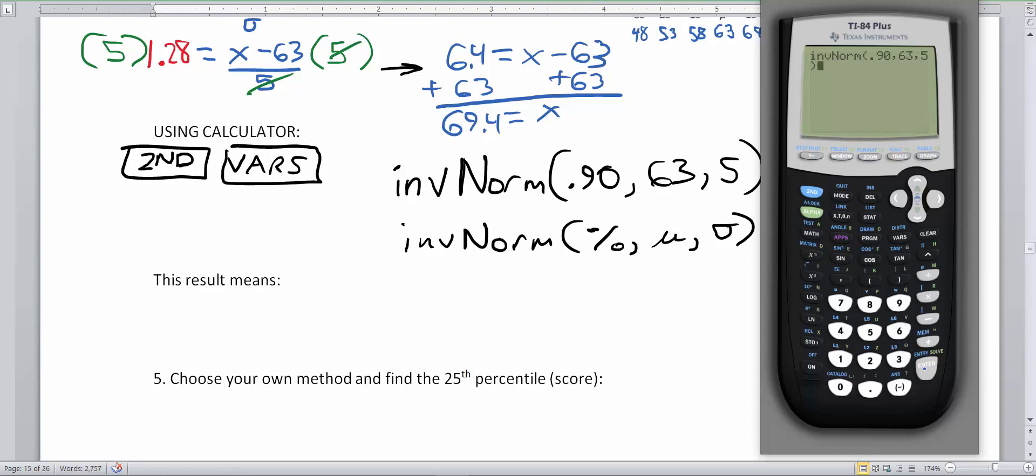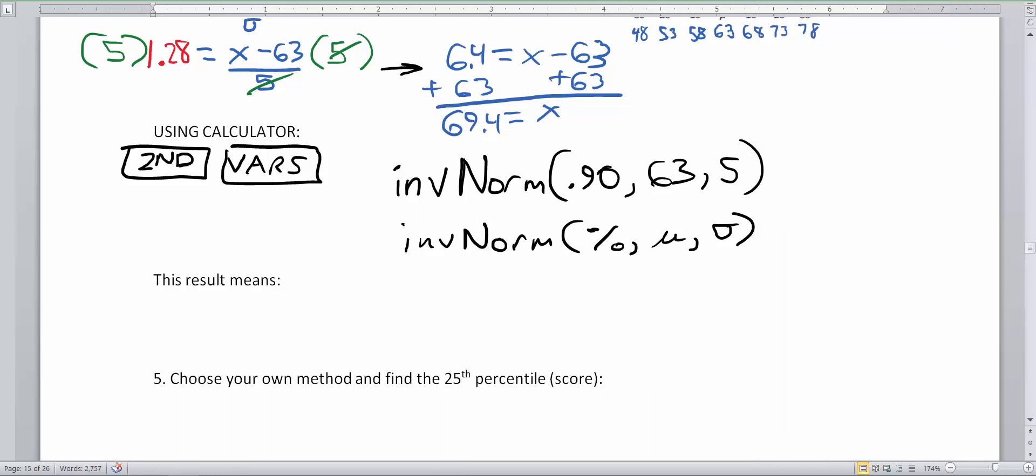And the result means, look at that, 69.4, just what we found up here. So this result means 69.4 is the score indicating the 90th percentile. Or you could say that 90% of the possible scores are below 69.4.